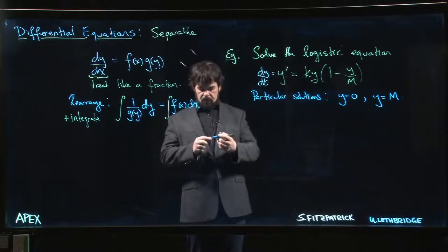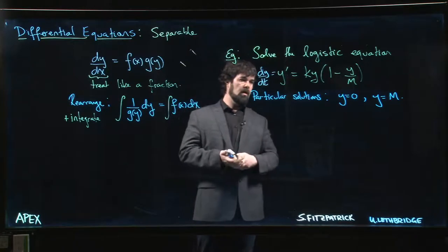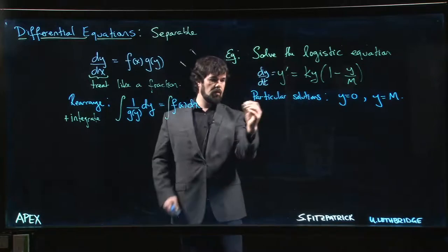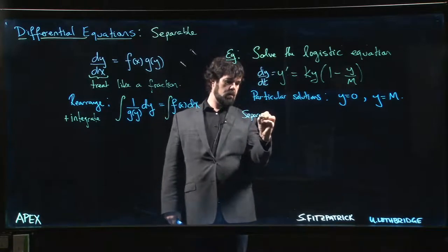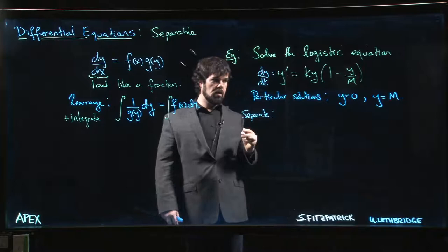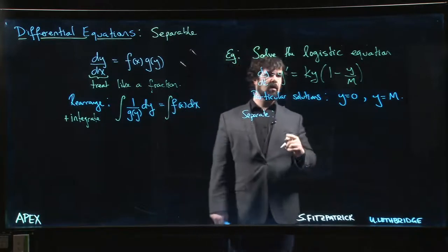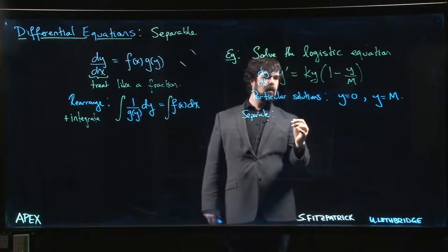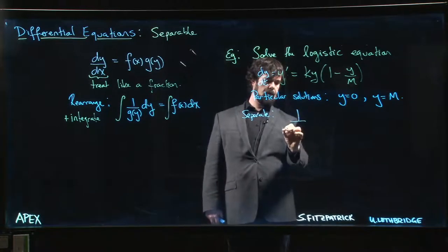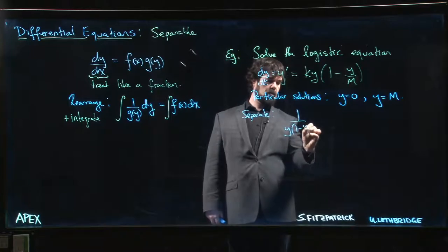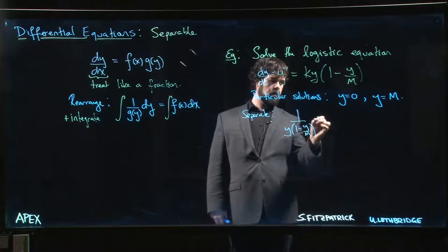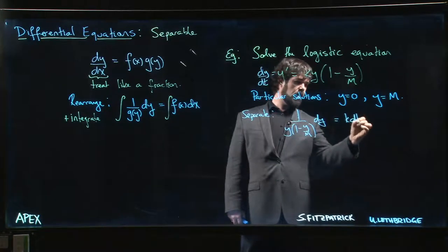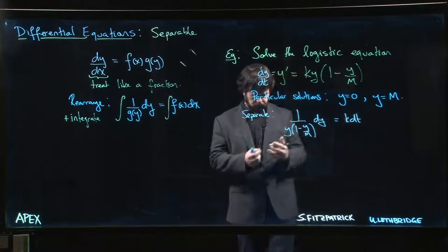Okay, so we have those two sort of stable scenarios where y just remains constant. Otherwise we expect y to be changing. So with the particular solutions aside, we can try to separate, we can try to solve. As usual, we're going to basically take everything here and move it to the other side. We can leave the k there. So we have 1/y times (1 - y/M) dy is equal to simply k times dt.